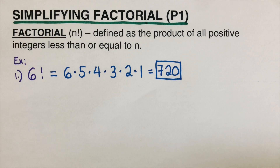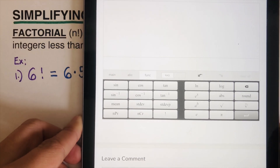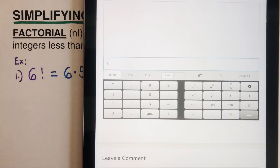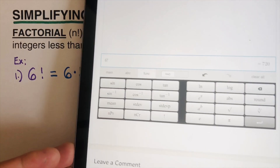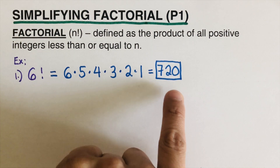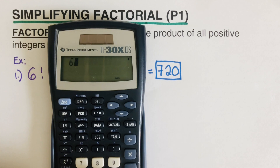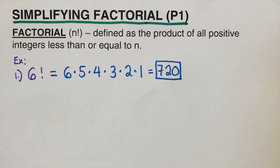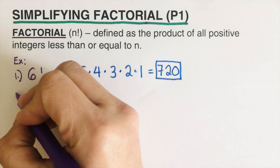I'll show you how to compute this on a calculator — I've put the link in Google Classroom. On the main menu, hit 6, then go to Function and hit the exclamation mark, and you get 720. On a scientific calculator, hit 6, go to Probability, then Factorial — 6 factorial equals 720. Alternatively, just multiply 6 times 5 times 4 times 3 times 2 times 1.